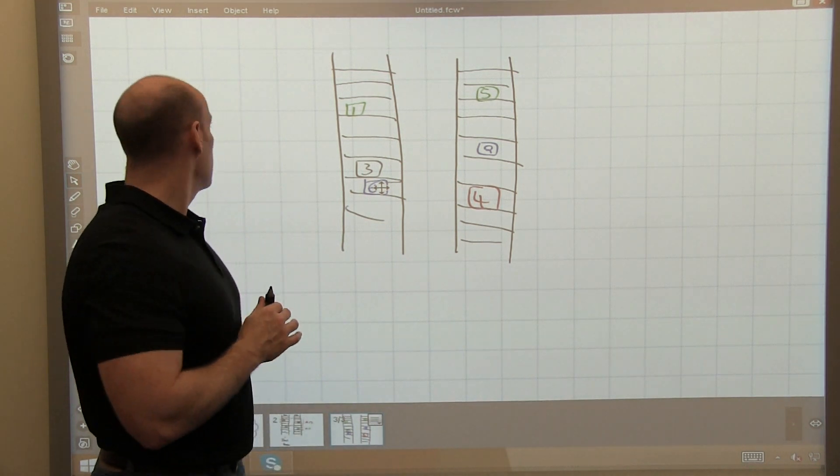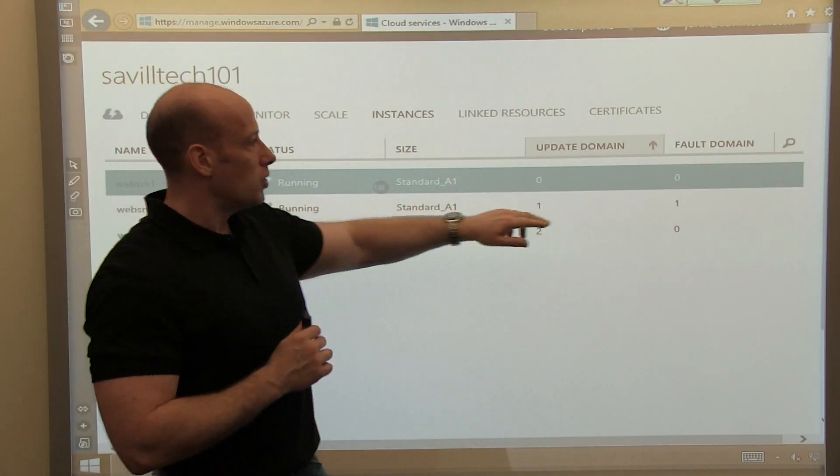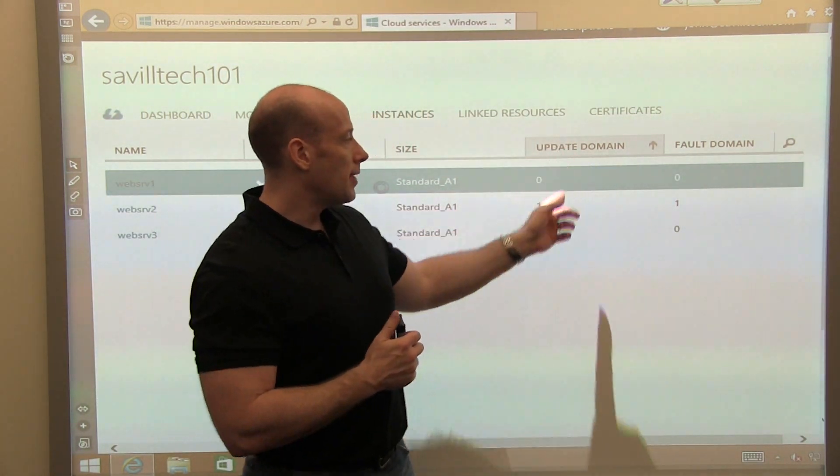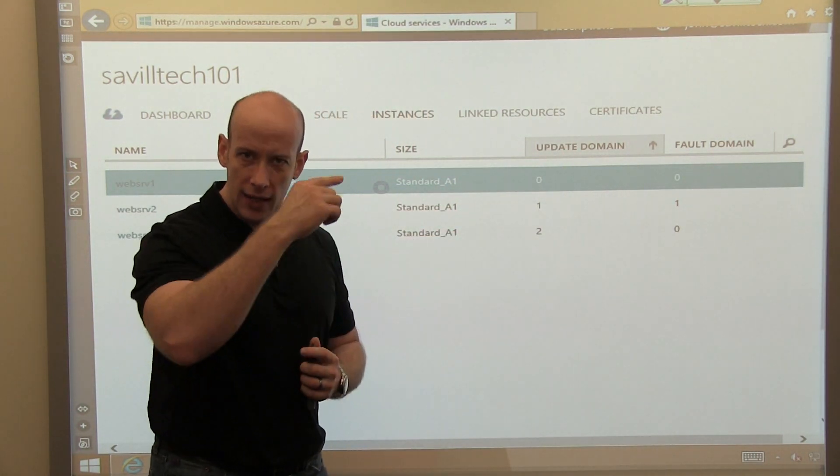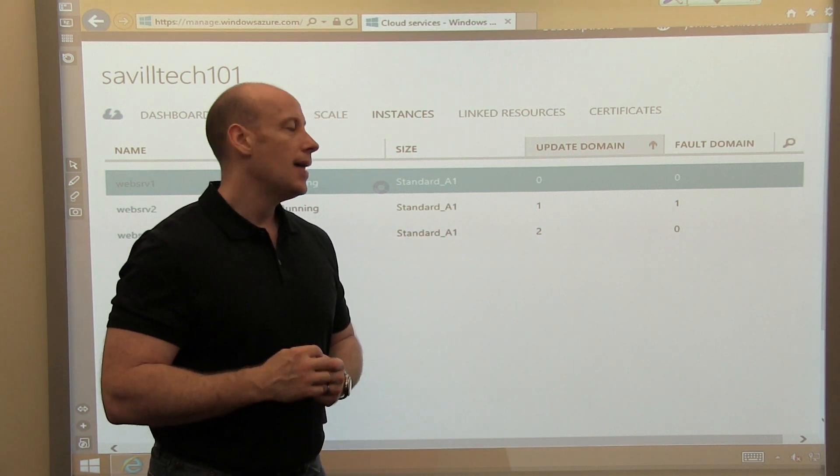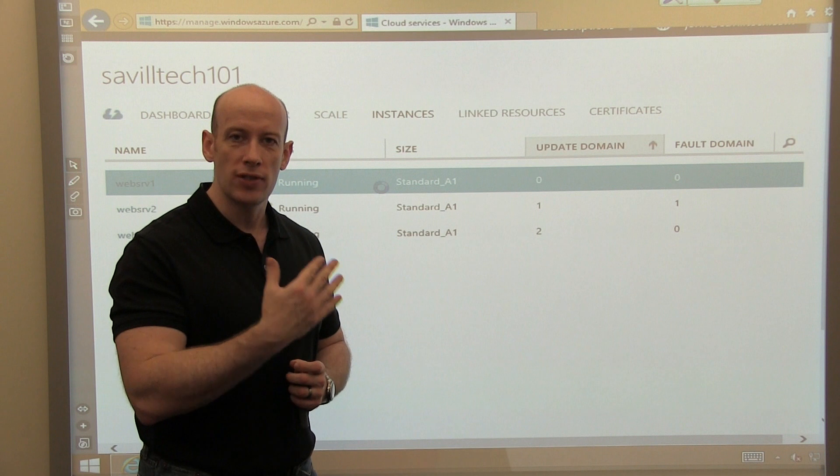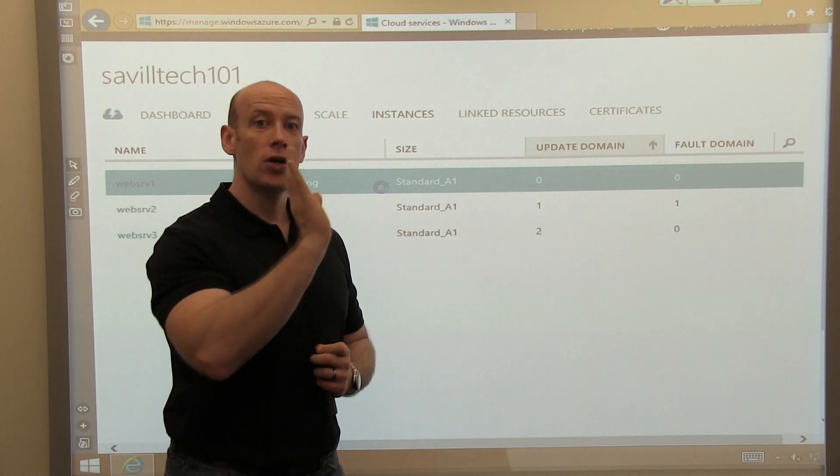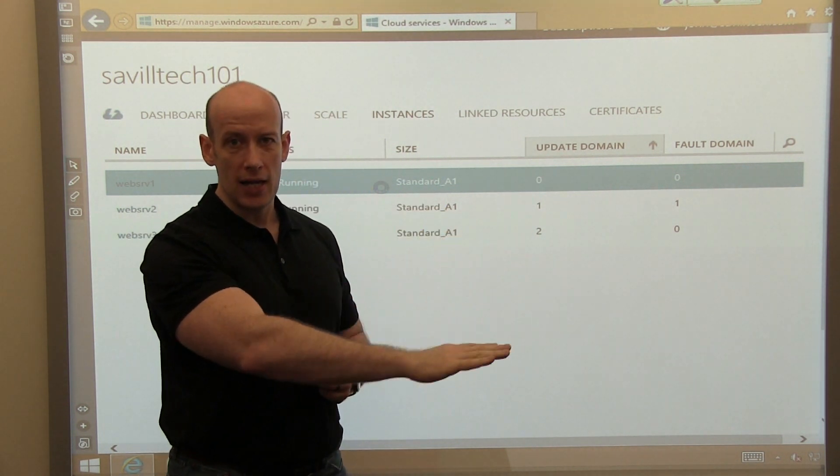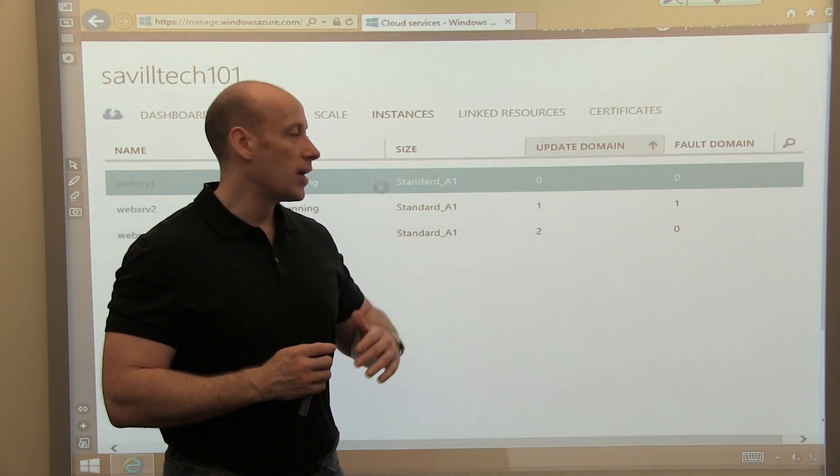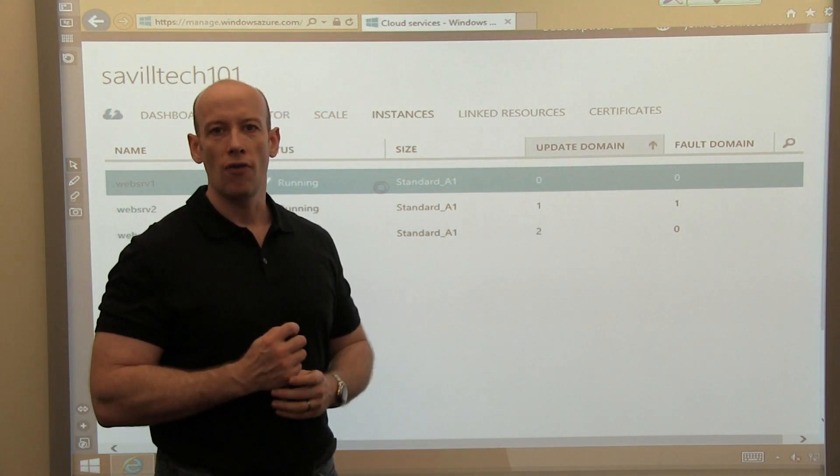So that's really the big difference. I think about fault domains, I'm split over two, unplanned failures. Update domains, I'm split over five, again, assigned in a round robin. And that's for planned maintenance operations for IaaS, for those host updates. Again, PaaS is also used when I think about updating my application. Being IaaS, we don't have that concept. But that's how we're going to minimize the downtime of our workloads.